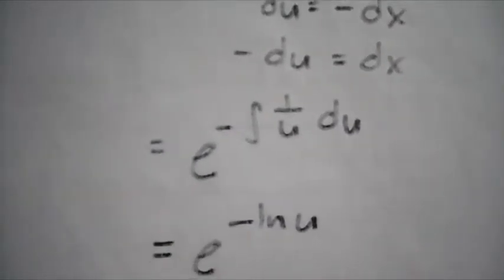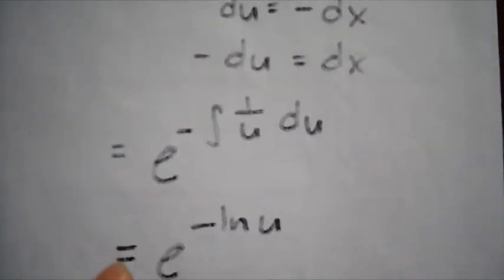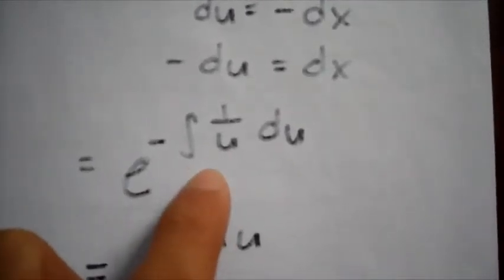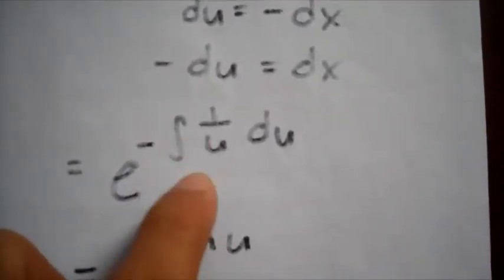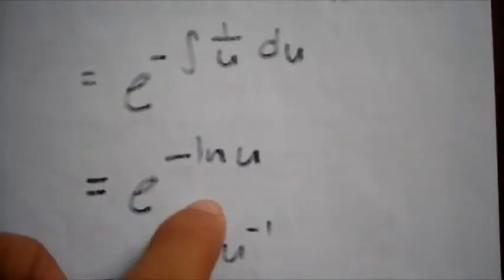Substituting it we get e equal to e to the negative integral of 1 over u du. Now this is just equal to ln of u, so we get e to the negative ln u.